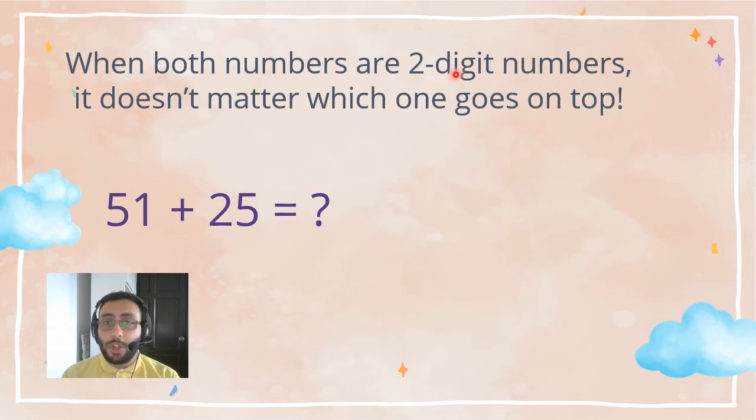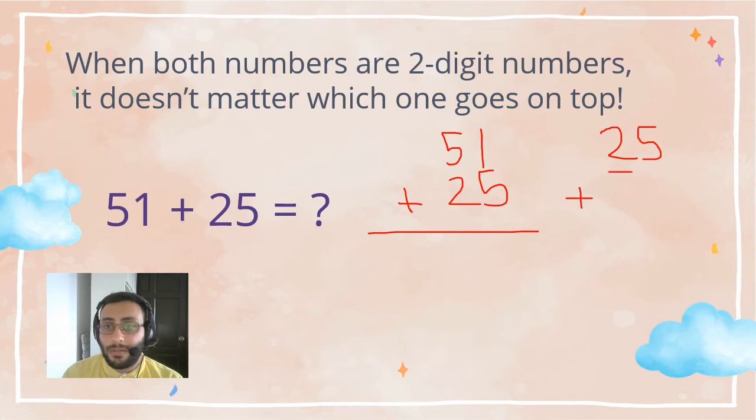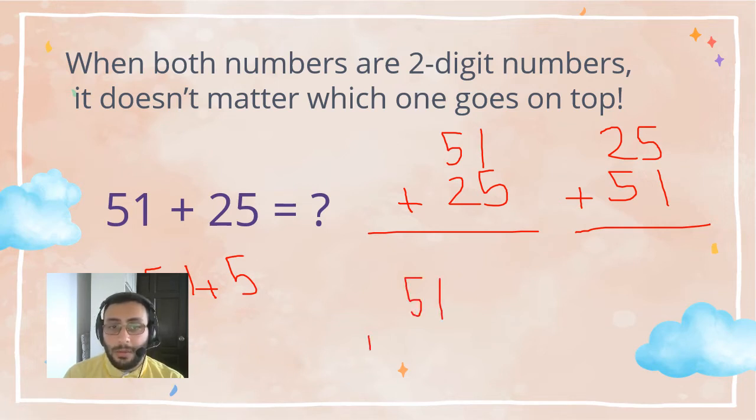When both numbers are two-digit numbers, it doesn't matter which one goes on top. So, if it's one digit plus two digit, or two digit plus one digit, two digit always goes on top. The one with the bigger digit goes on top, and the one with smaller digit comes down. But, if it's two digit plus two digit, like 51 plus 25, it doesn't matter. You can write 51 plus 25, or you can write 25 plus 51. But, if it's 51 plus 5, you have to write 51 plus 5. Cannot write 5 plus 51.